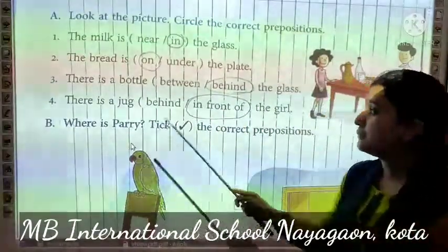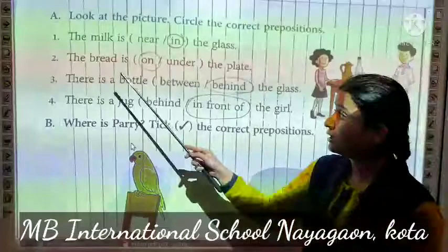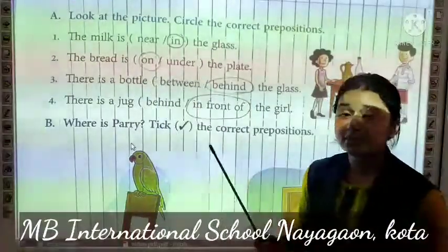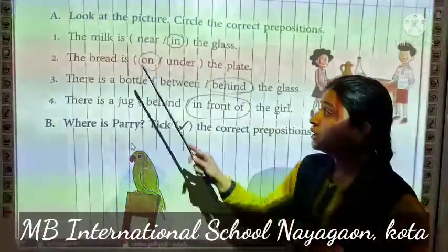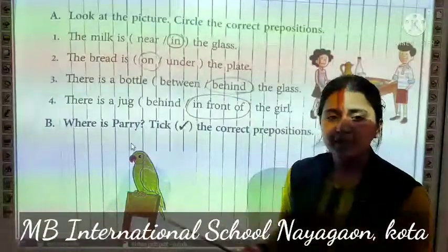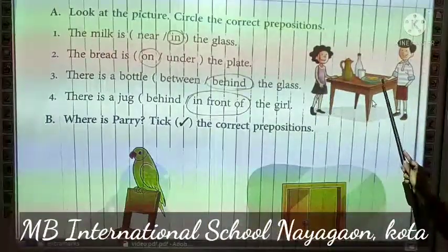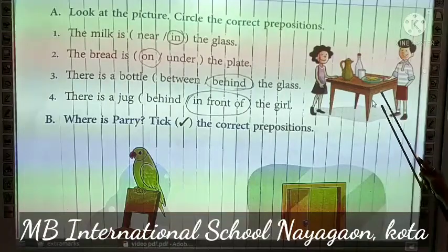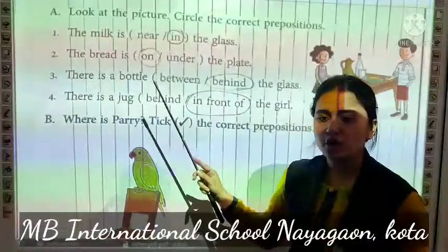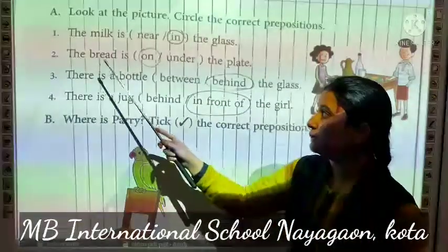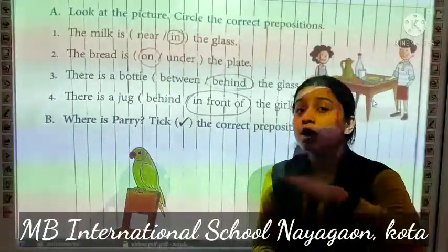Second one is, the bread is dash the plate — yaha pere hai on ya under. On means upar, aur under means niche. Toh yaha pere picture mein ki joh bread hai woh plate ke upar hai. Toh hum yaha on use karenghe — on means upar. The bread is on the plate, joh bread hai woh plate ke upar hai.